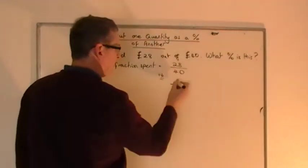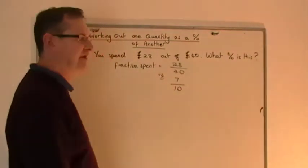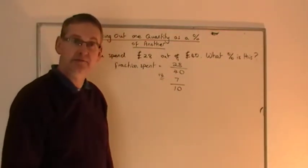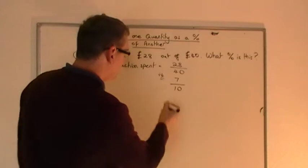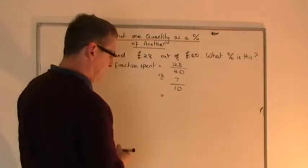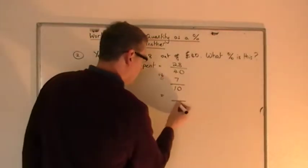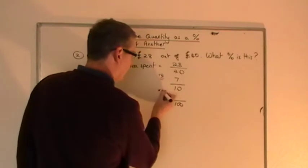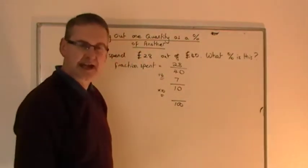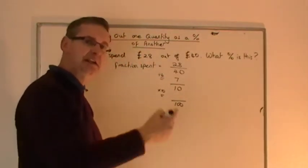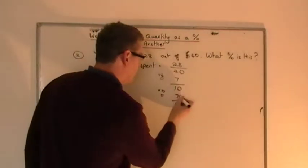So I share the top by 4. If you share the top by 4, you get 7. 7 4s are 28. Now you've got it at 7 over 10, then all I'm going to do is times that 10 by 10 to get 100. So now I times the top by 10, I get 70.